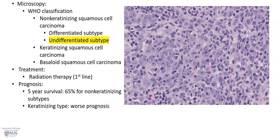Radiotherapy is the main line of treatment and this tumor is usually very responsive. The prognosis for five years is reasonable at about 65% for the non-keratinizing subtypes. Unfortunately, the keratinizing types have a worse prognosis.